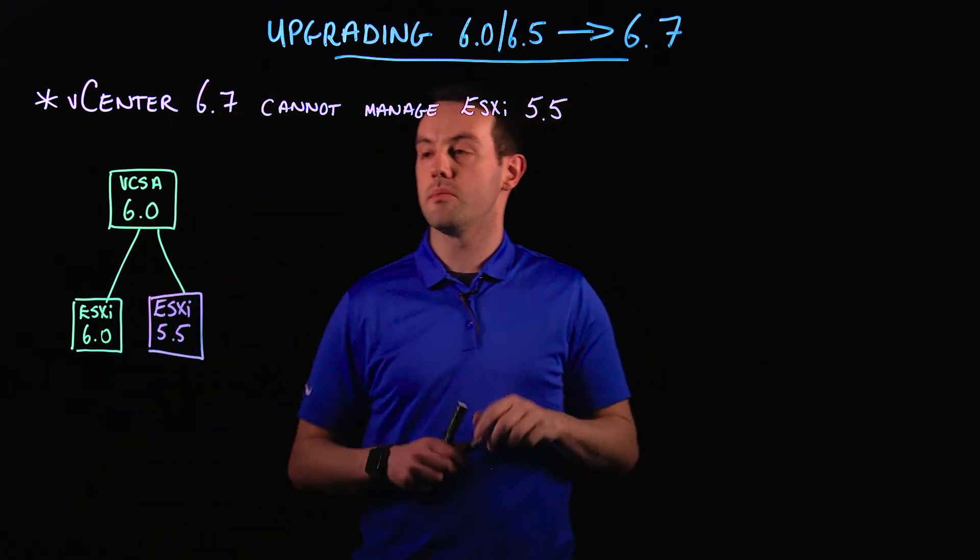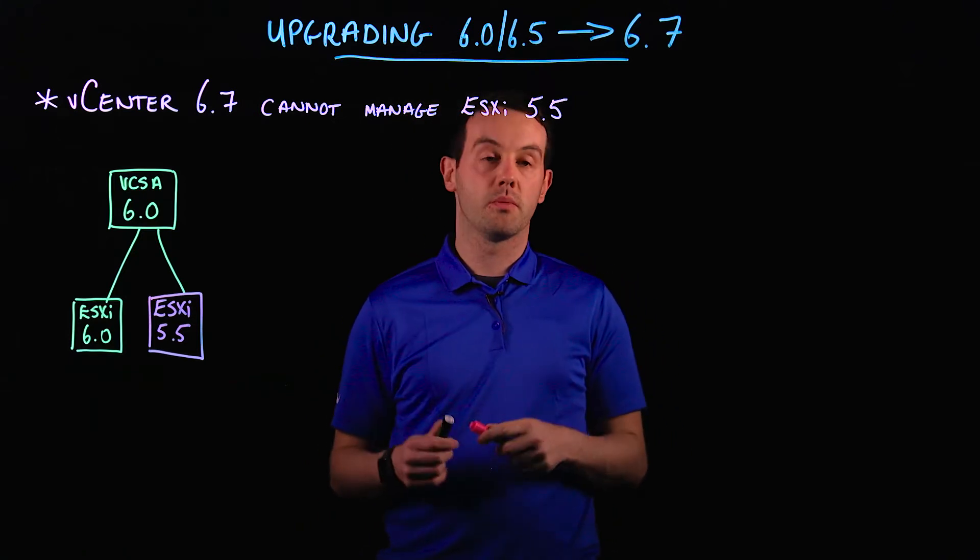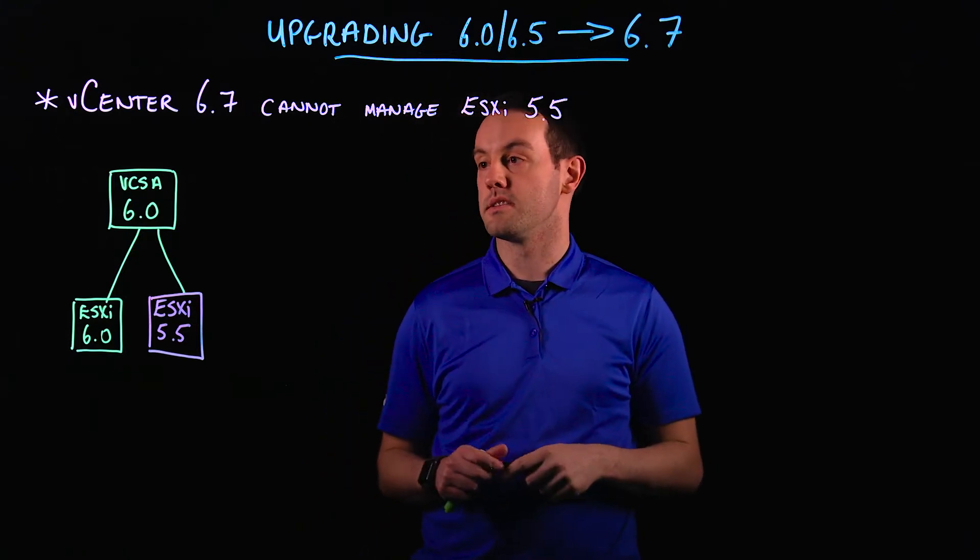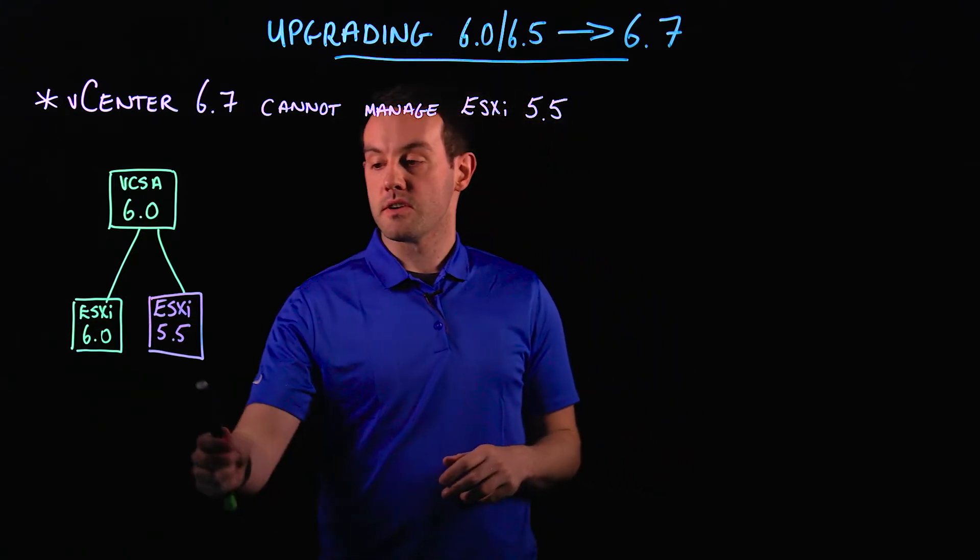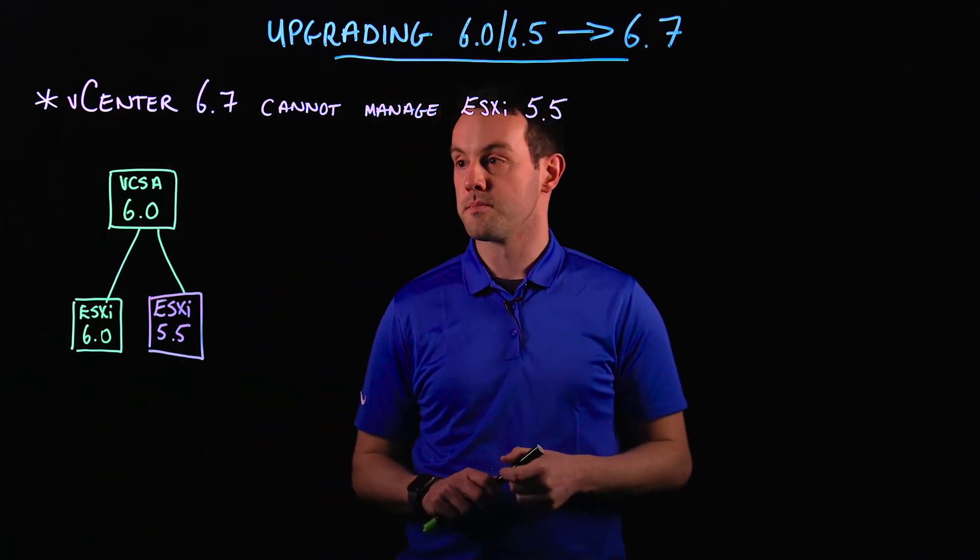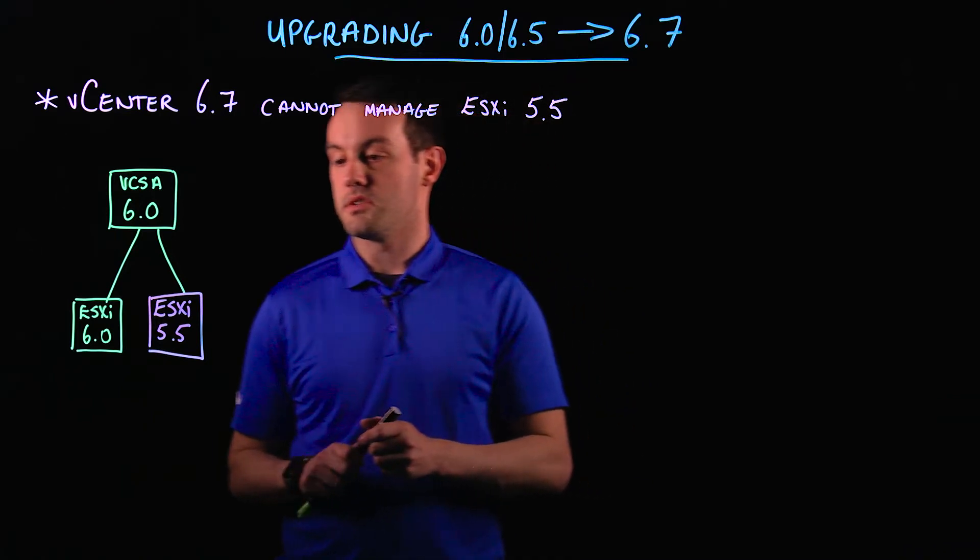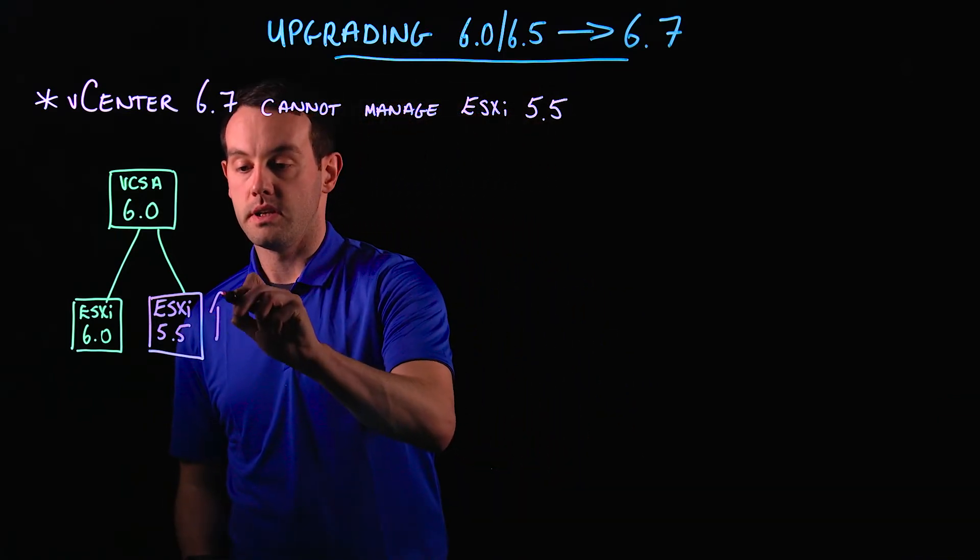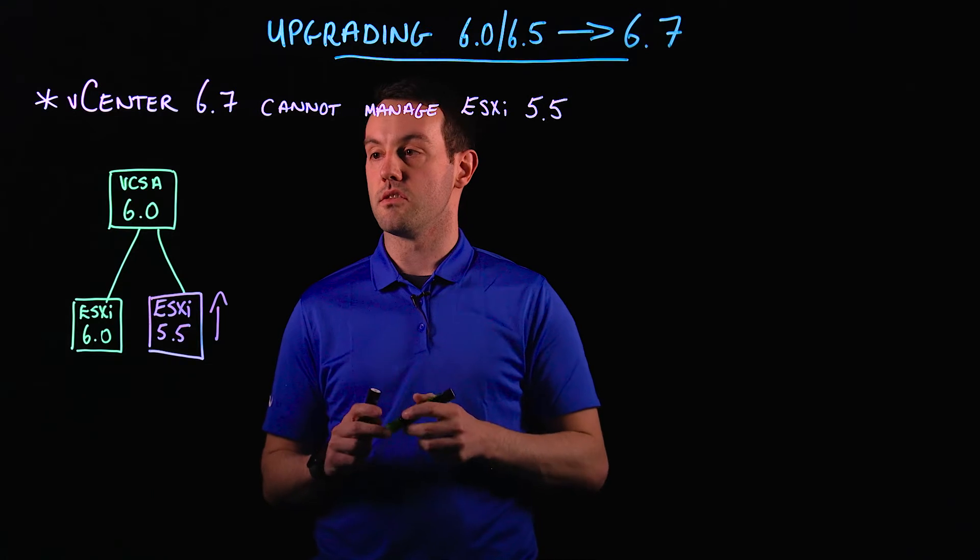Before we begin to upgrade this environment, before we upgrade the vCenter Server Appliance to 6.7, we need to first make sure that our ESXi 5.5 hosts are upgraded. So our first step would be to upgrade the ESXi 5.5 hosts to 6.0.